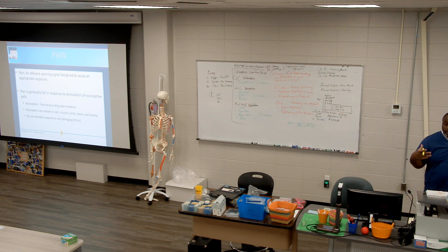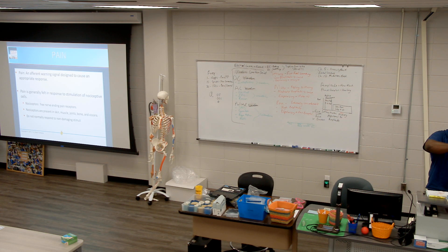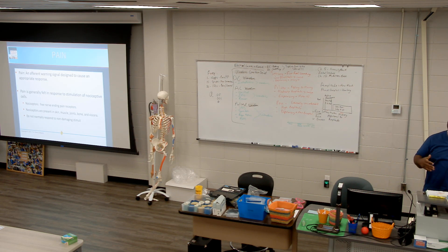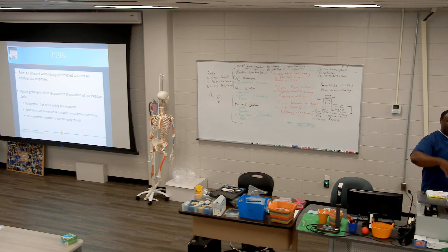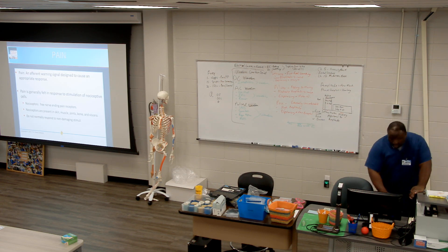The neck is C3, upper shoulder is C4, outer shoulder is C5. The lateral arm down to the thumb and index finger is C6, the middle finger is C7 — so if you're in the car and somebody cuts you off and you feel like you need to salute them, that's C7. C8 and T1 come up the medial side of the arm.